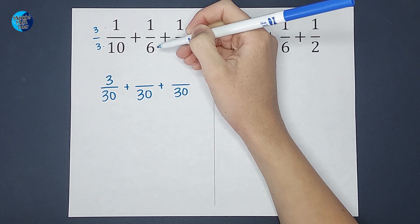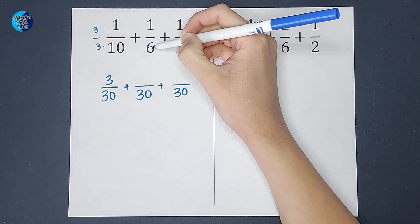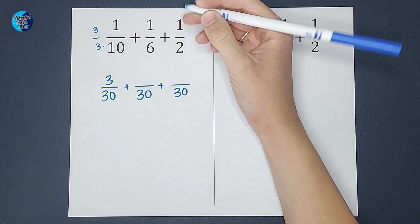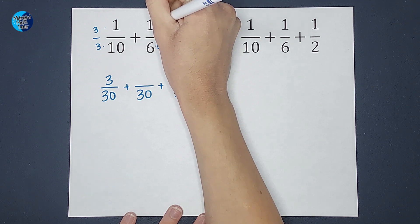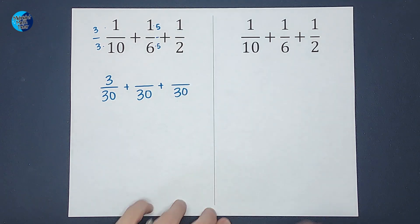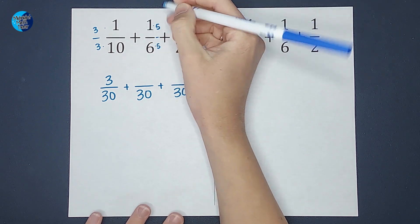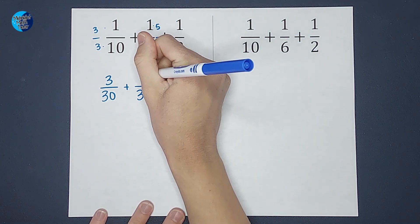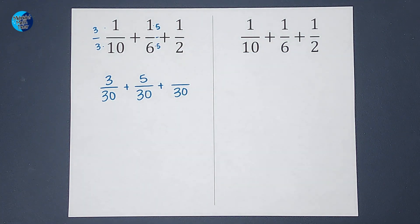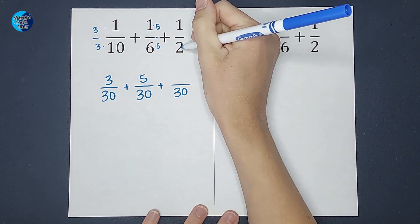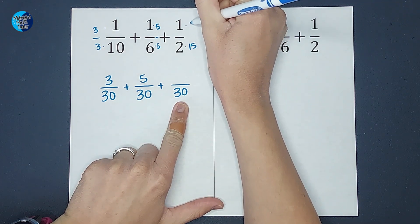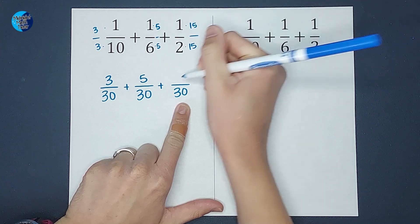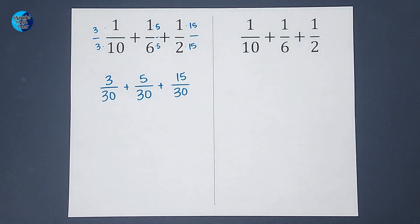Now, what about one-sixth? What did I multiply six by to get 30? I multiplied it by five. If I multiply the bottom by five to keep my fraction the same, I need to also multiply the top. So one times five gives me five. So this fraction and this fraction are equal. They just look a little different. Now, two times 15 would give me that 30. If I multiply the bottom, I got to multiply the top. So I end up with 15 out of 30.